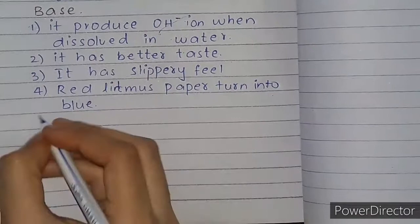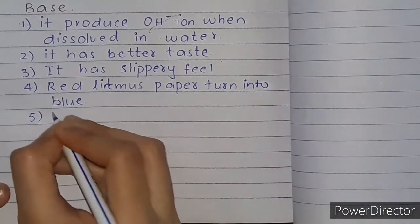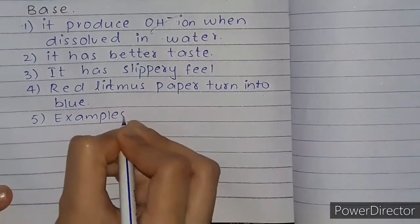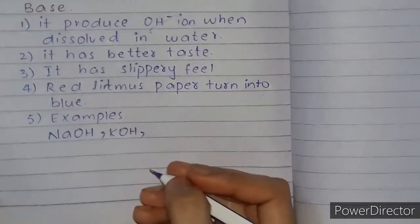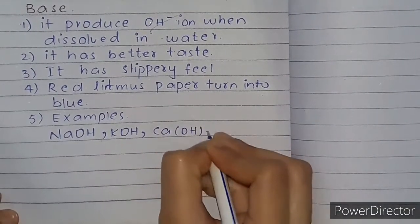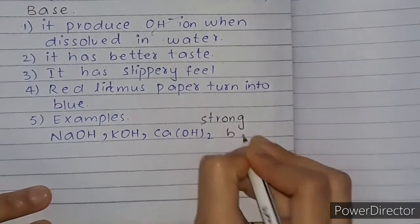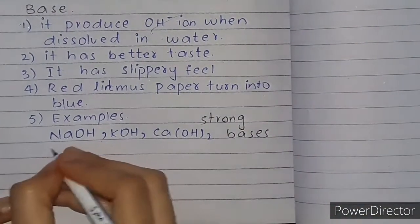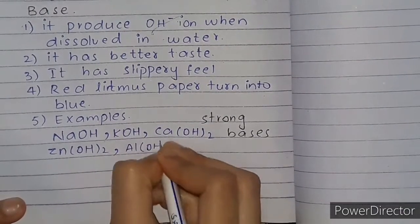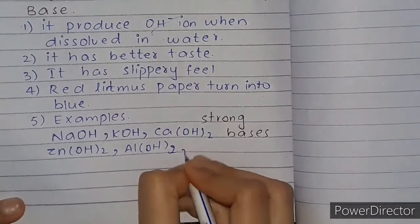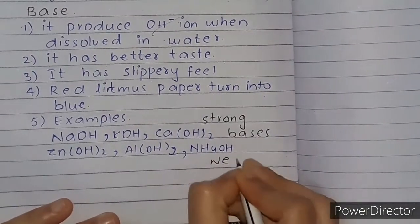Four, five examples. Examples of strong bases and weak bases. Weak bases include aluminum hydroxide.